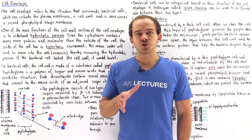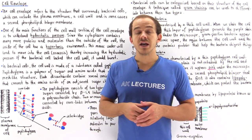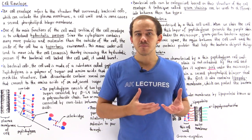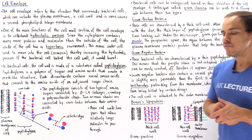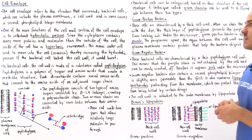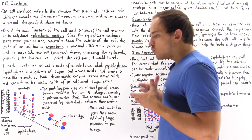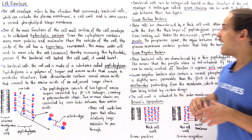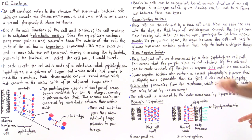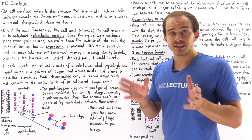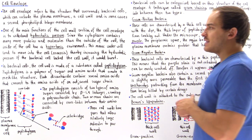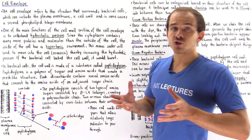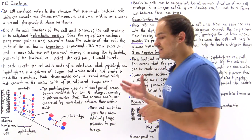The cell envelope refers to the structure found outside our bacterial cell, and this includes the actual plasma membrane, a cell wall, and in some cases a second membrane — a second phospholipid bilayer, as we'll see in just a moment. Generally speaking, we have two different types of bacterial cells: gram positive and gram negative, and we differentiate between them using a technique known as gram staining. Before discussing these two types, let's discuss the structure and function of the cell wall.